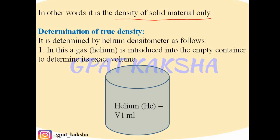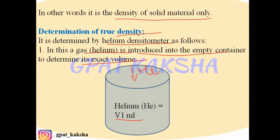True density can be determined using a helium densitometer. In this method, helium gas is introduced into an empty container to determine its exact volume. The volume of helium gas required to completely fill the container is noted — say it is V1 ml.